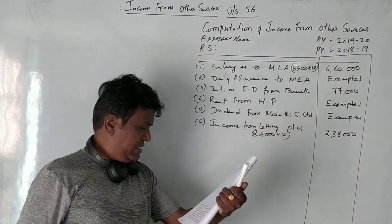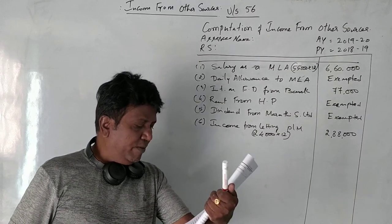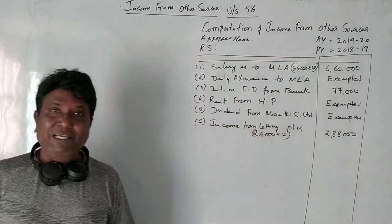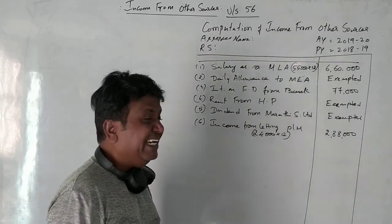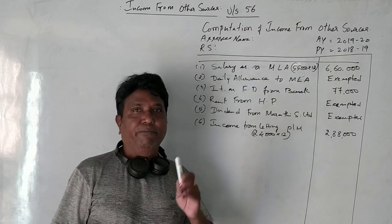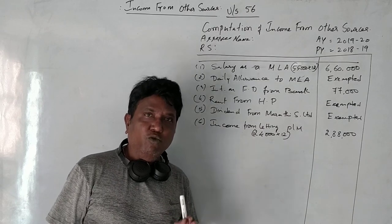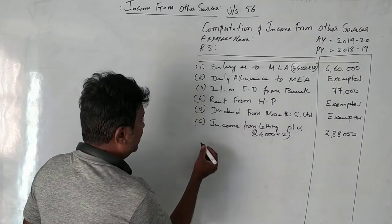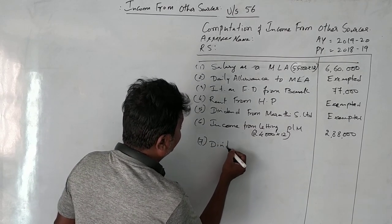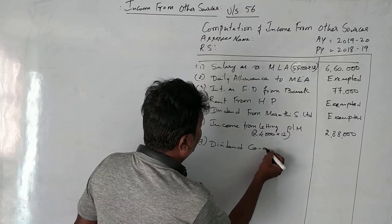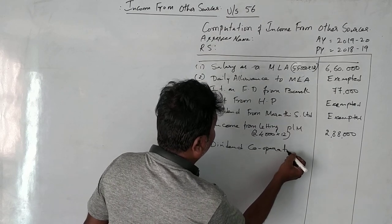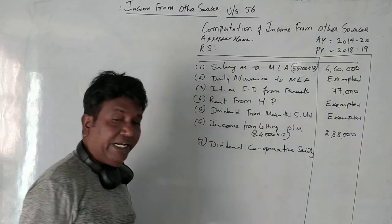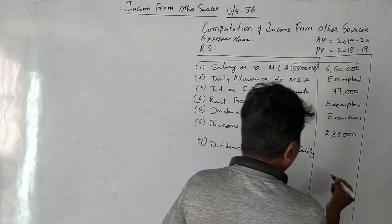Next is dividend from SIRSI Cooperative Society: 4,800. As explained in the basic concepts, any dividend from a cooperative society is fully taxable. Therefore, dividend from cooperative society — 4,800 — is written as fully taxable.